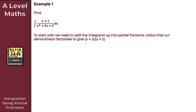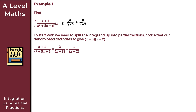Notice that our denominator here factorizes to give (x + 3)(x + 2). So our integrand can be rewritten into partial fractions as A over (x + 3) plus B over (x + 2). In terms of finding A and B — splitting this algebraic fraction up into partial fractions — this should be pretty trivial. I won't go into massive detail, but this is what you should get.